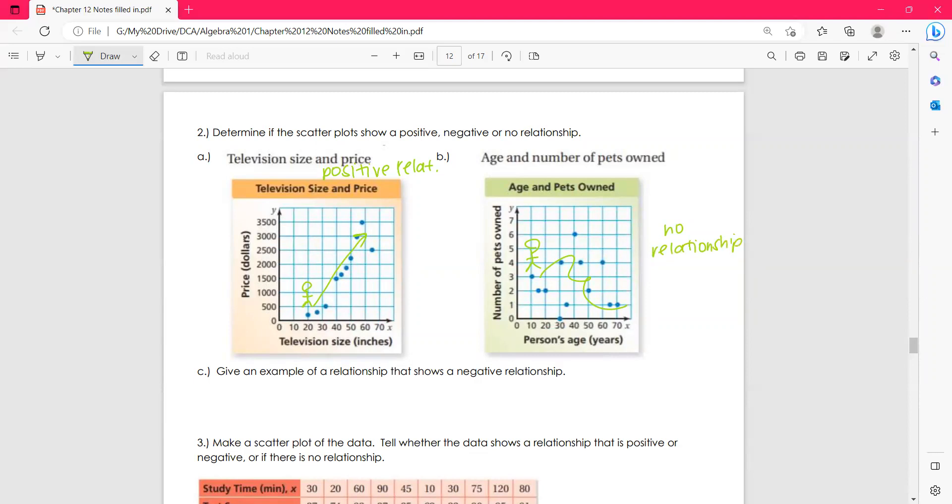Give an example of a relationship that shows a negative relationship. Okay, so we can kind of think about this. A negative relationship, so something that's going downhill. As something's increasing, something else is decreasing. And I want to think about something that gets to increase. How about temperature increases. What goes down? As temperature increases, as it gets hotter, hot chocolate sales decrease. Okay, right? That shows a negative correlation.